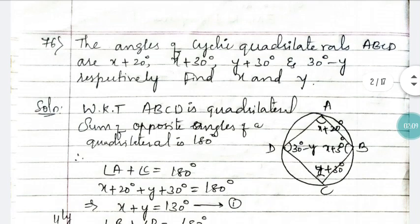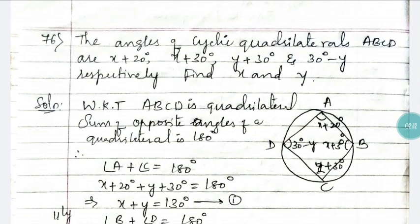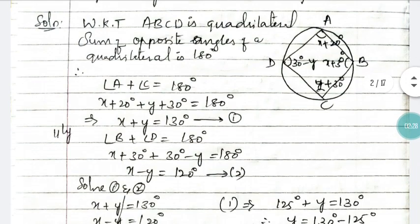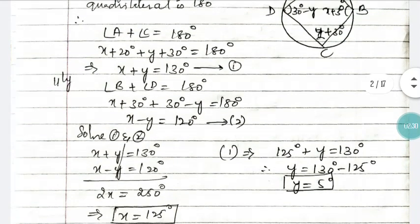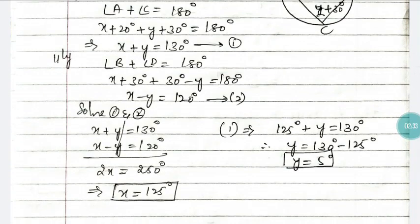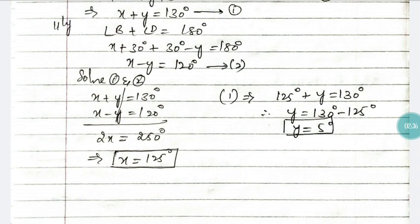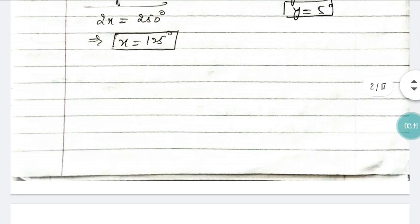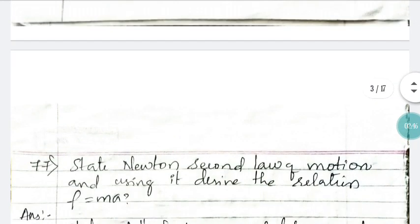Question 76: the angles of a cyclic quadrilateral ABCD are given and they are asking to find the values of x and y. I have drawn a circle with a quadrilateral showing the four angles. Using the property that the sum of opposite angles of a cyclic quadrilateral is equal to 180°, form two equations, solve them, and you get x as 125° and y as 5°.